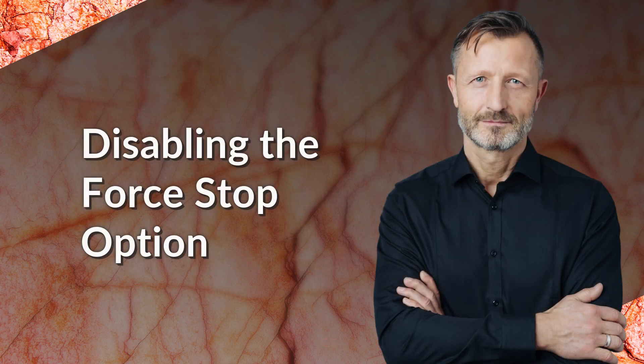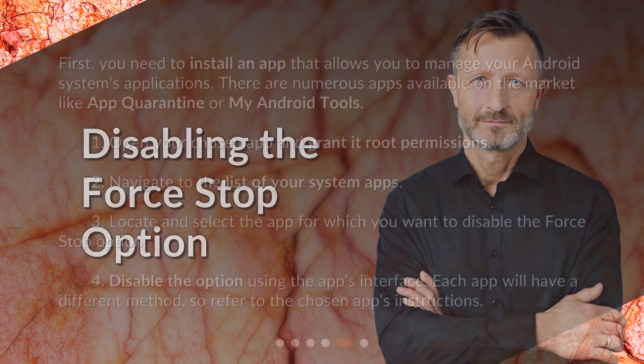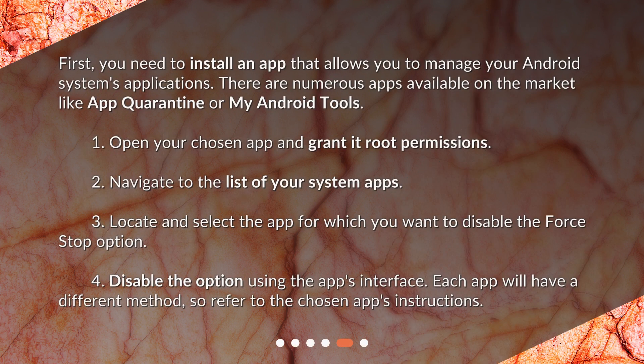To disable the Force Stop option, first you need to install an app that allows you to manage your Android system's applications. There are numerous apps available on the market like App Quarantine or My Android Tools. Open your chosen app and grant it root permissions. Navigate to the list of your system apps, then locate and select the app for which you want to disable the Force Stop option.